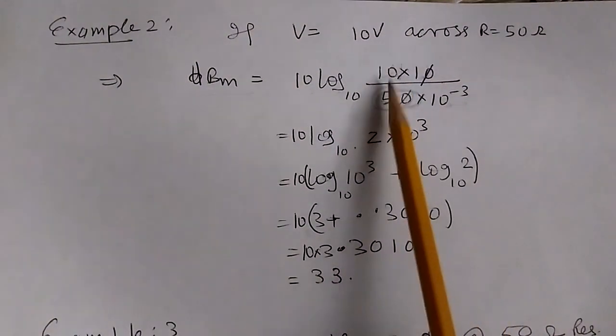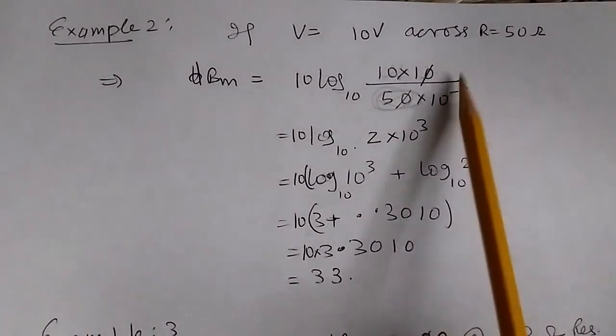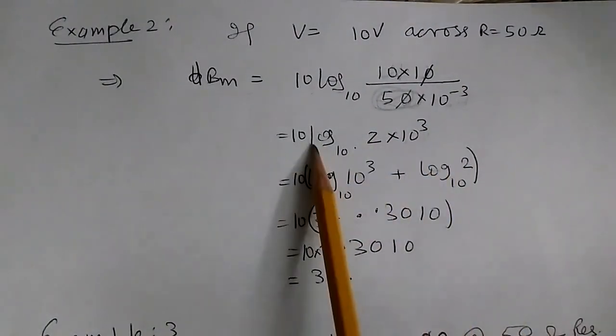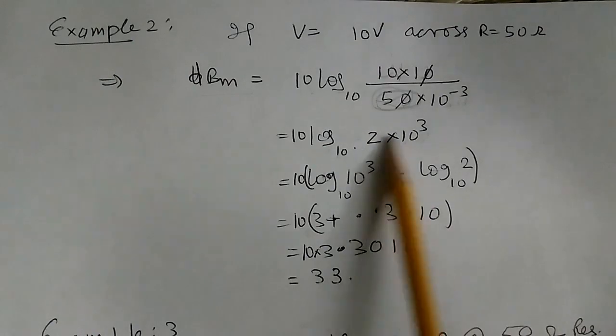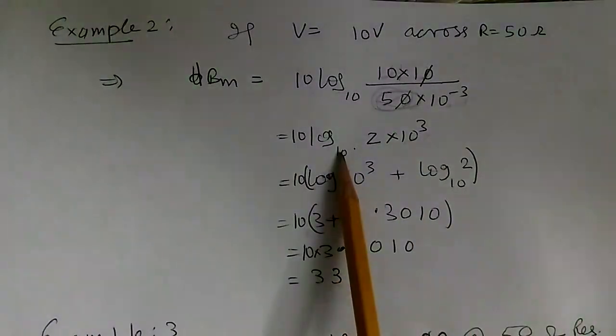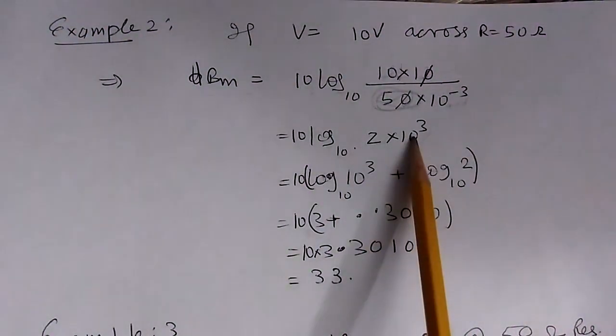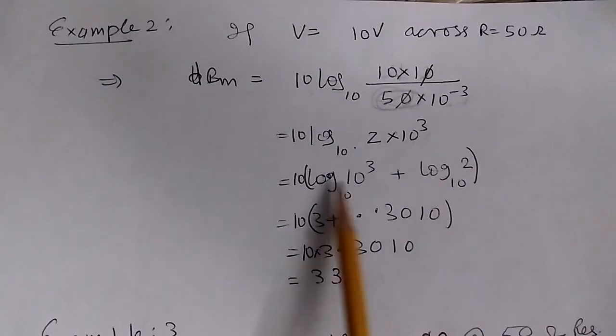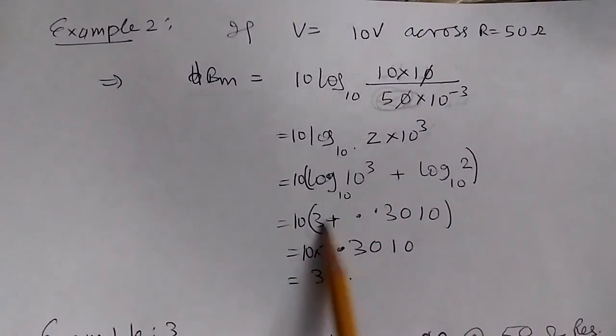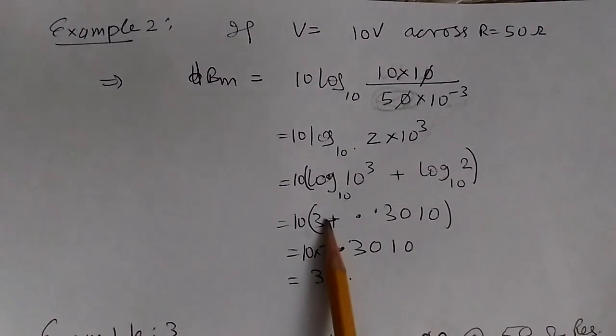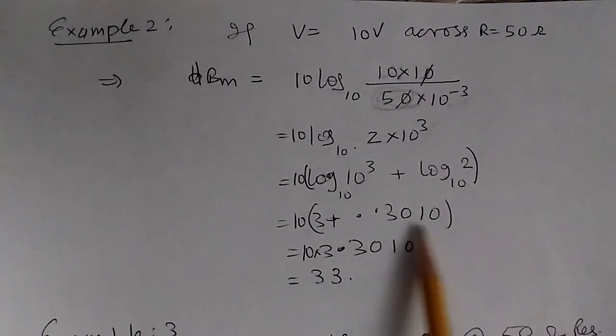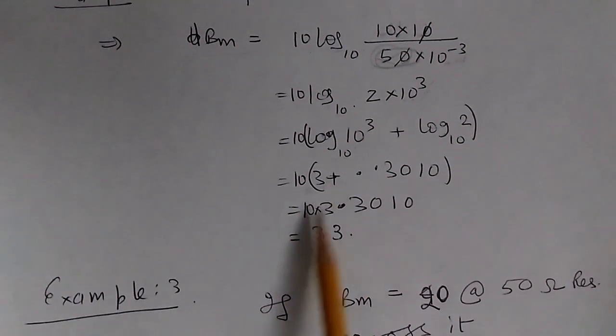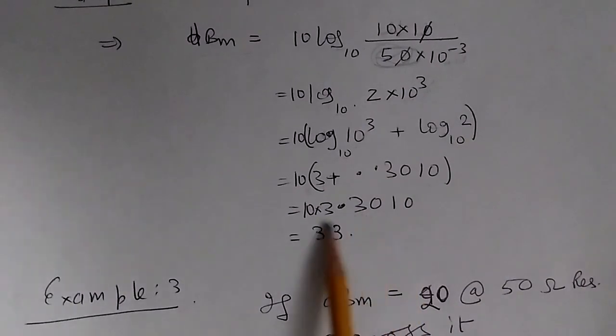100/50 = 2, and 10⁻³ goes up to become 10³. So we have 10 log₁₀(2 × 10³). Using log(A×B) = log(A) + log(B), we get log(10³) = 3 and log(2) ≈ 0.3010. This becomes 10 × (3.3) = 33.